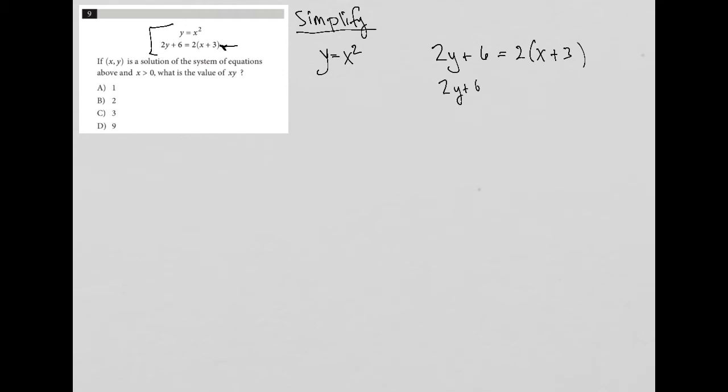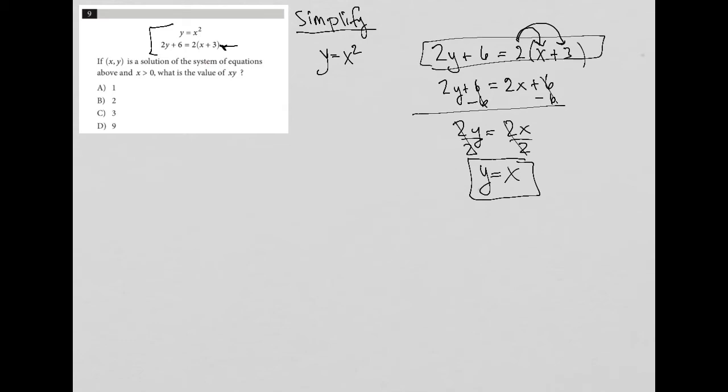So 2y plus 6 looks good but now I'm going to distribute this 2 across the parentheses here leaving me with 2x plus 6. I can subtract 6 from both sides leaving me with 2y equals 2x. Divide both sides by 2 in which case I have y equals x and now I have a simplified version. All of that that they originally gave us really just was y equals x. So I'm going to write that over here. So I now can show my two very simplified equations for my system of equations.